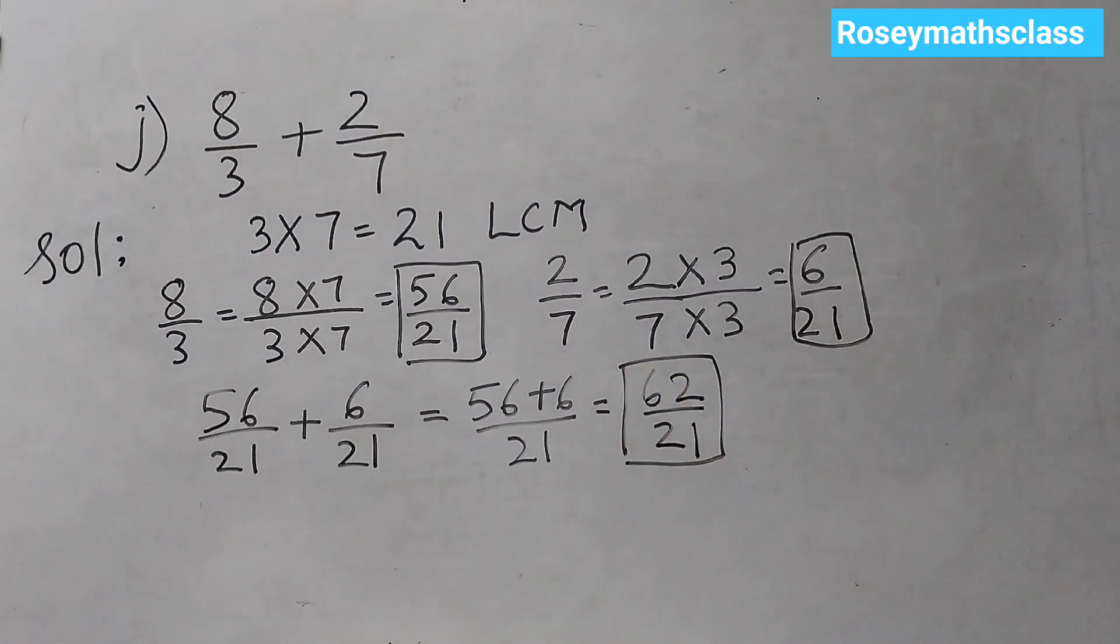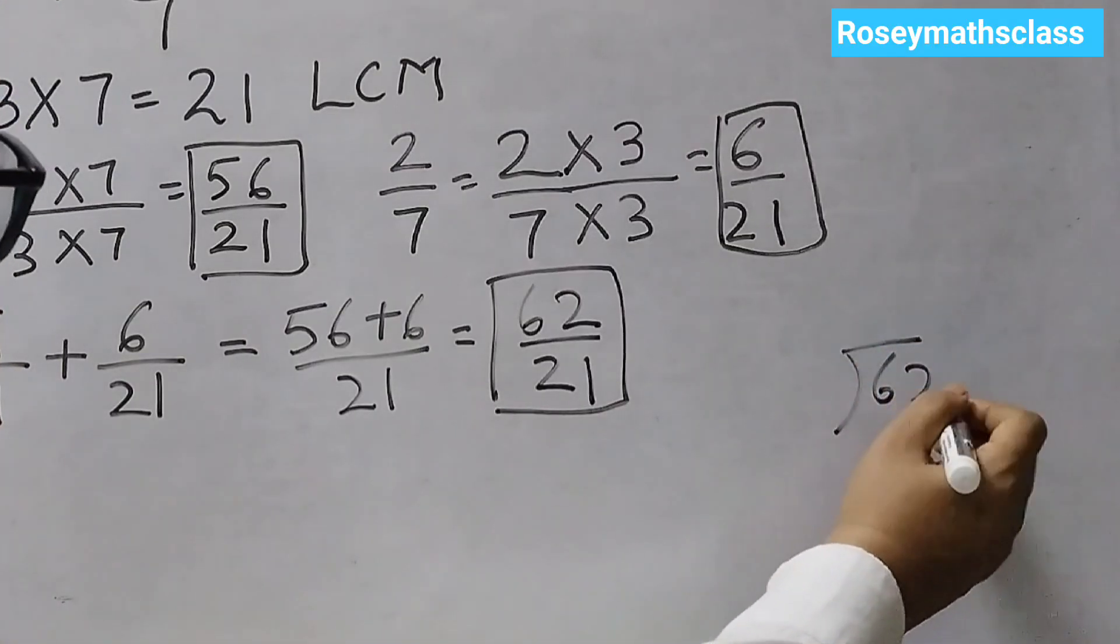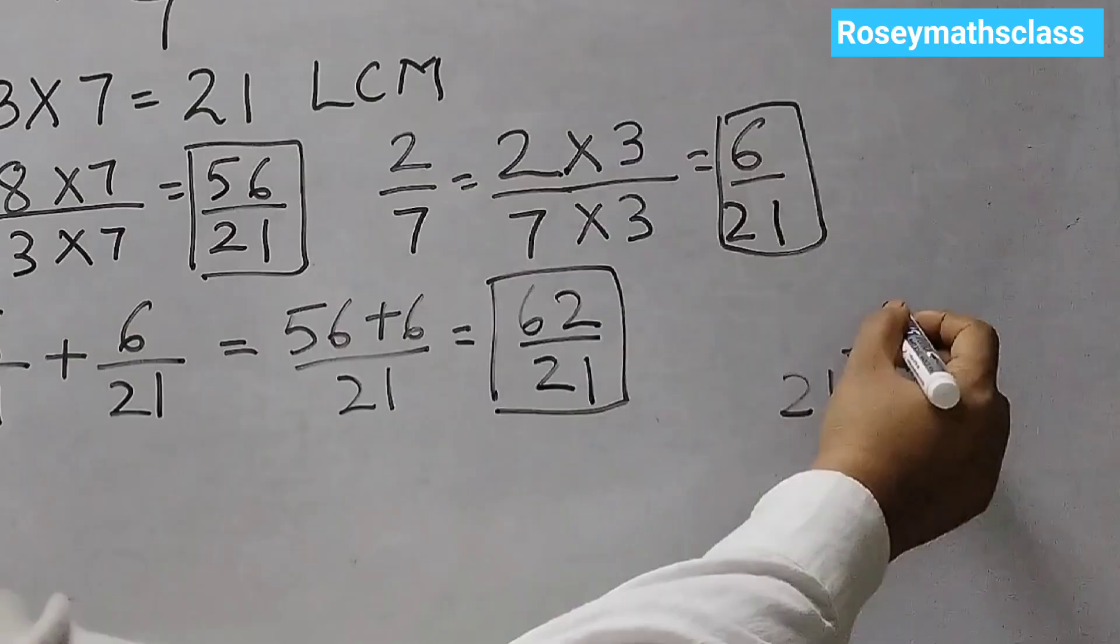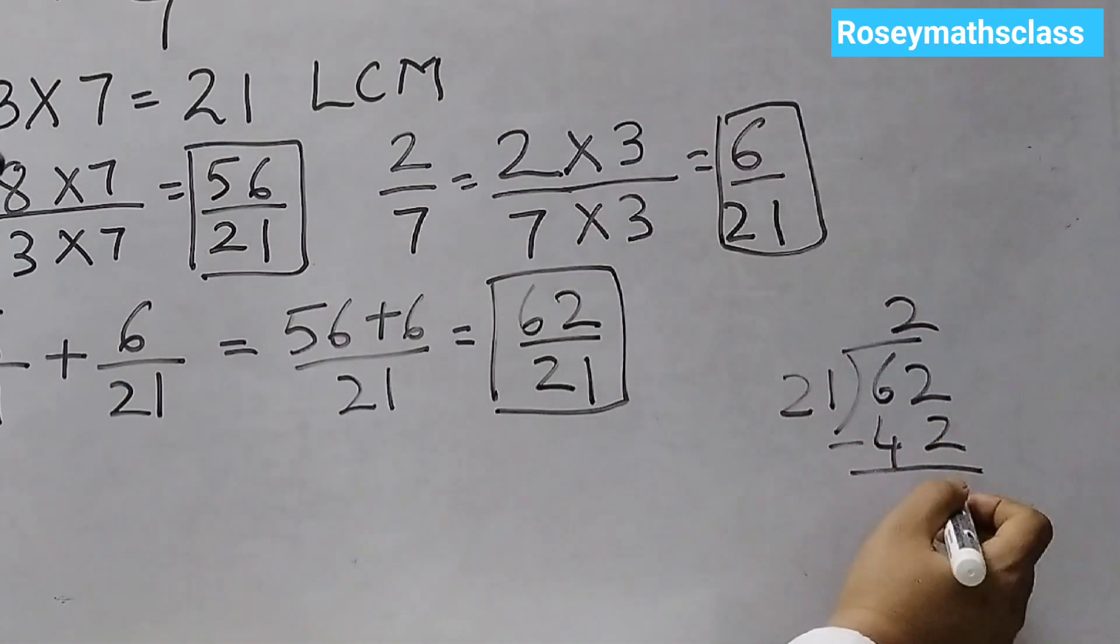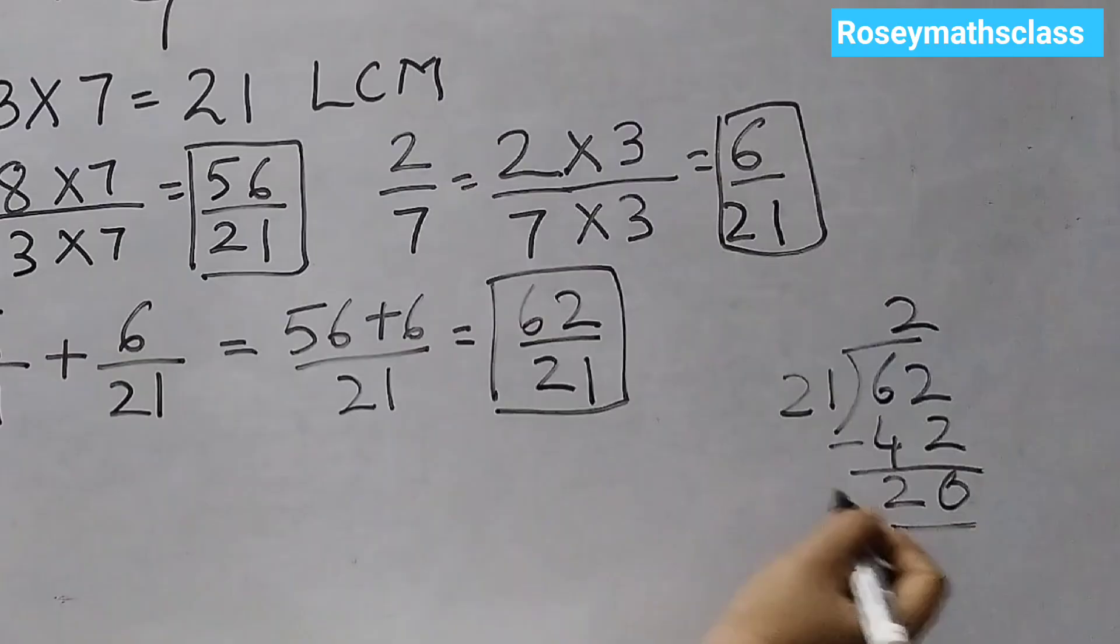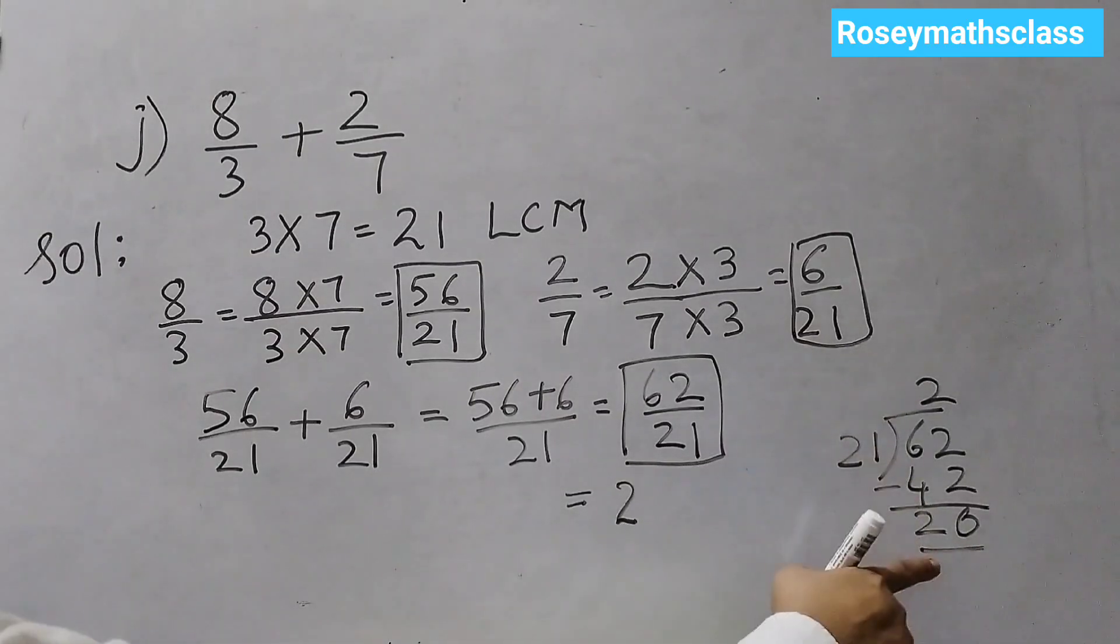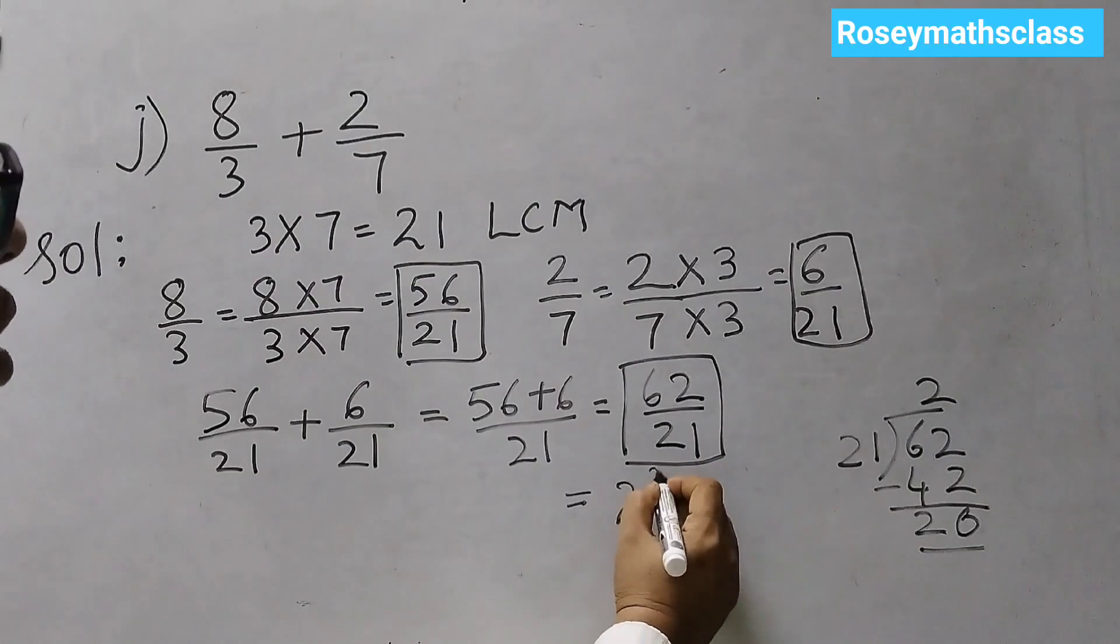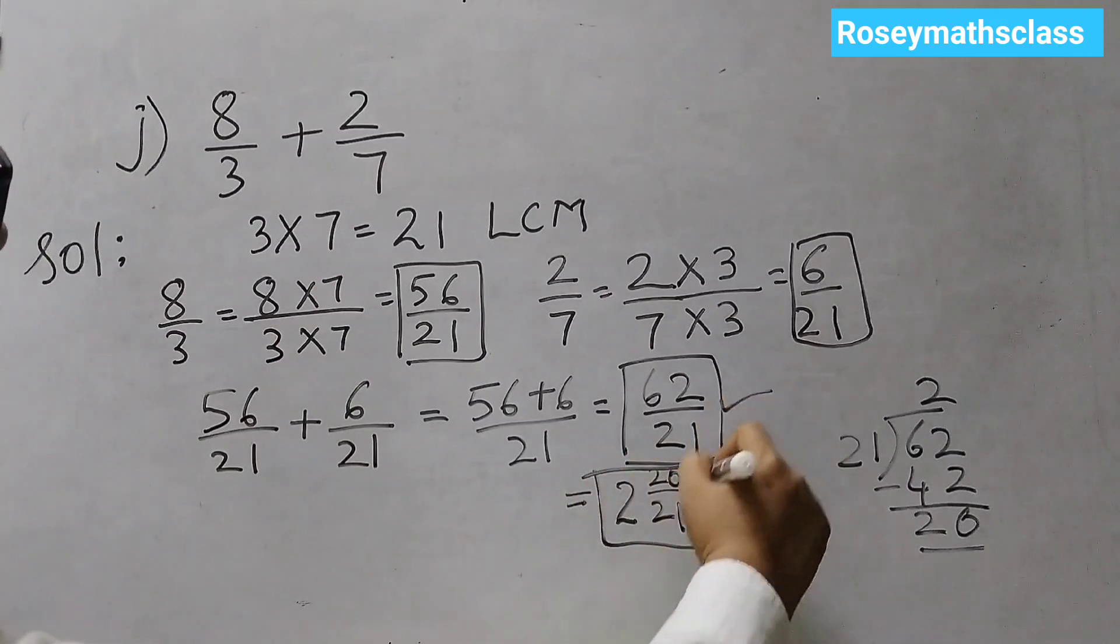And now, to convert this to a mixed number, we will divide 62 by 21. 21 into 62 is 2, remainder 20. So, the answer would be 2. We write this number first, 2, then the remainder and then the divisor. So, 2 whole 20 over 21. So, this could be one answer or this one.